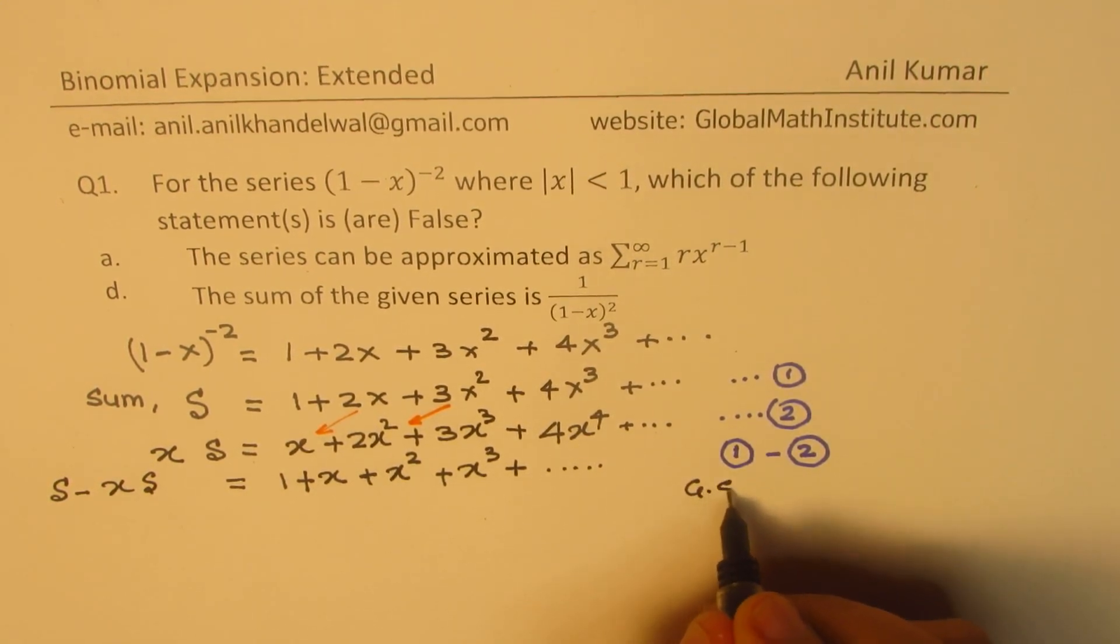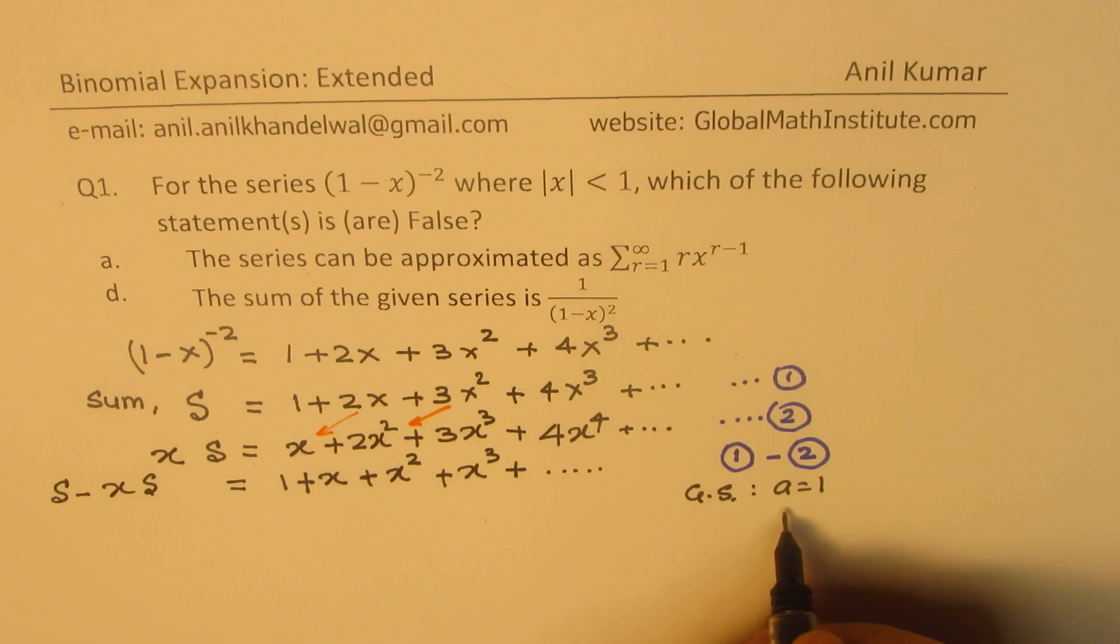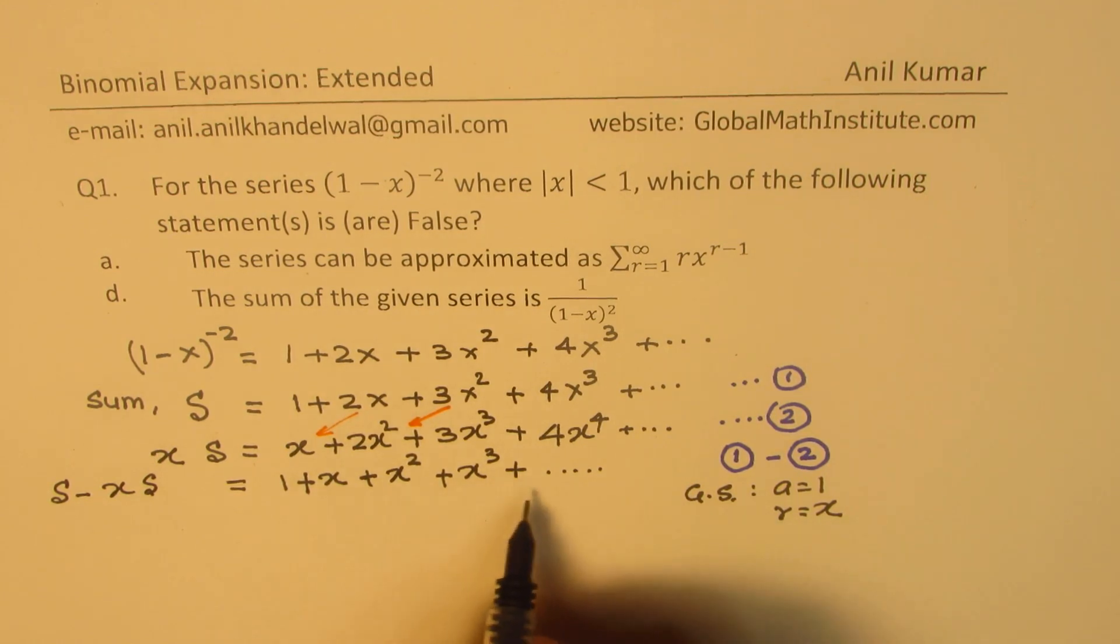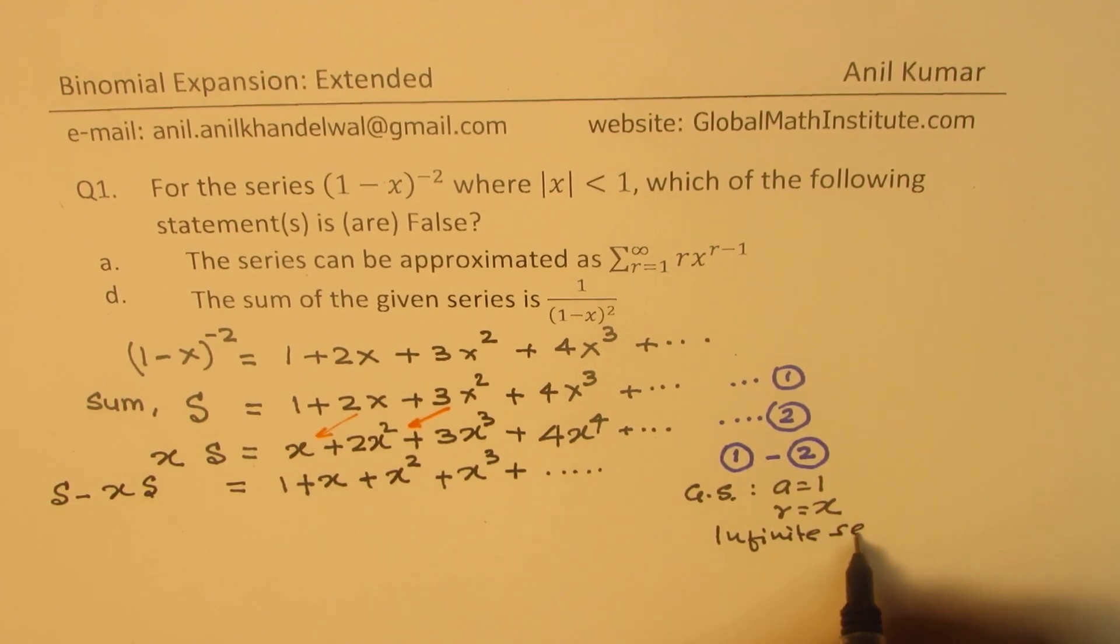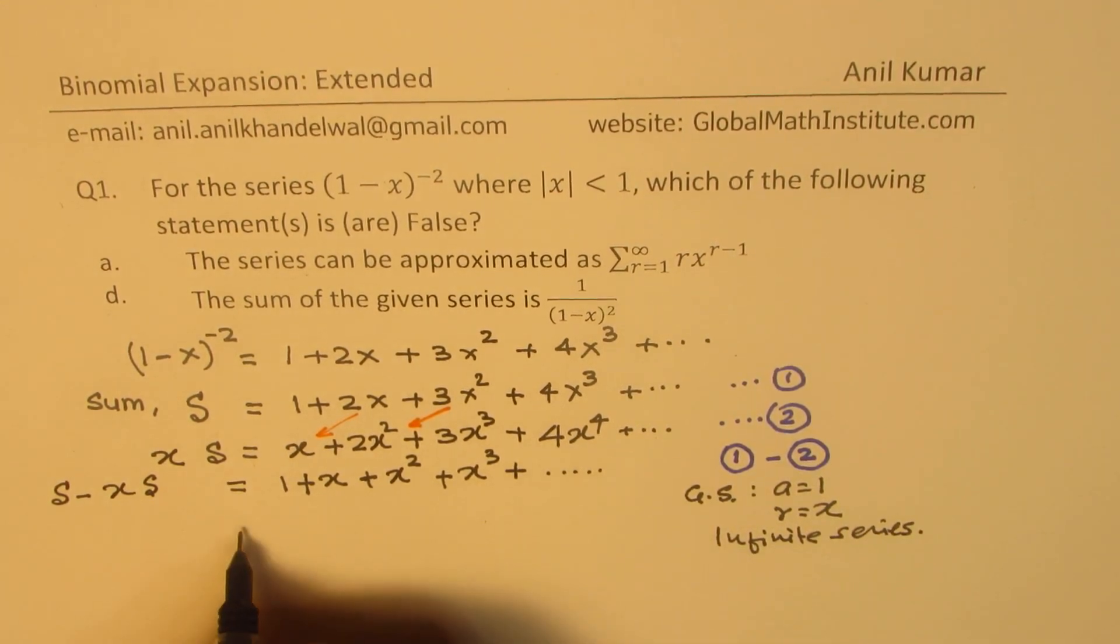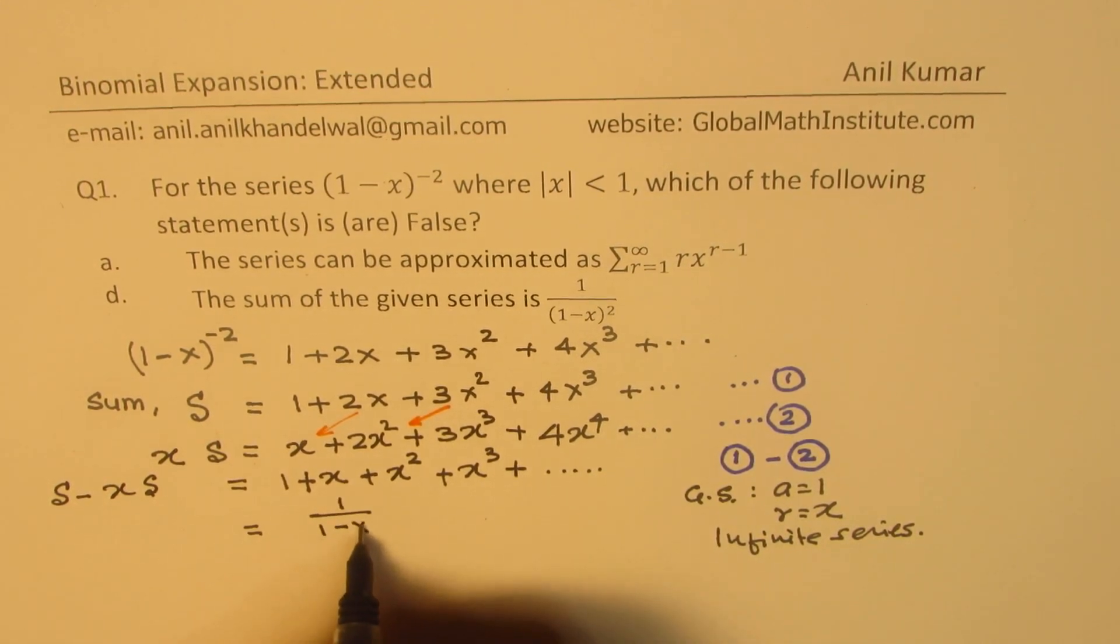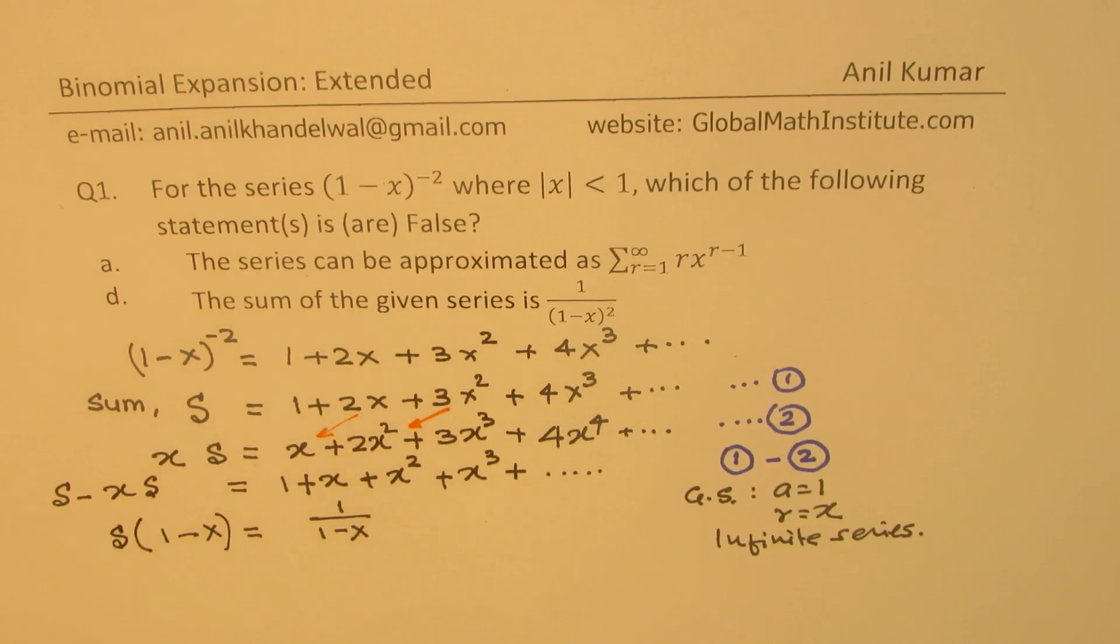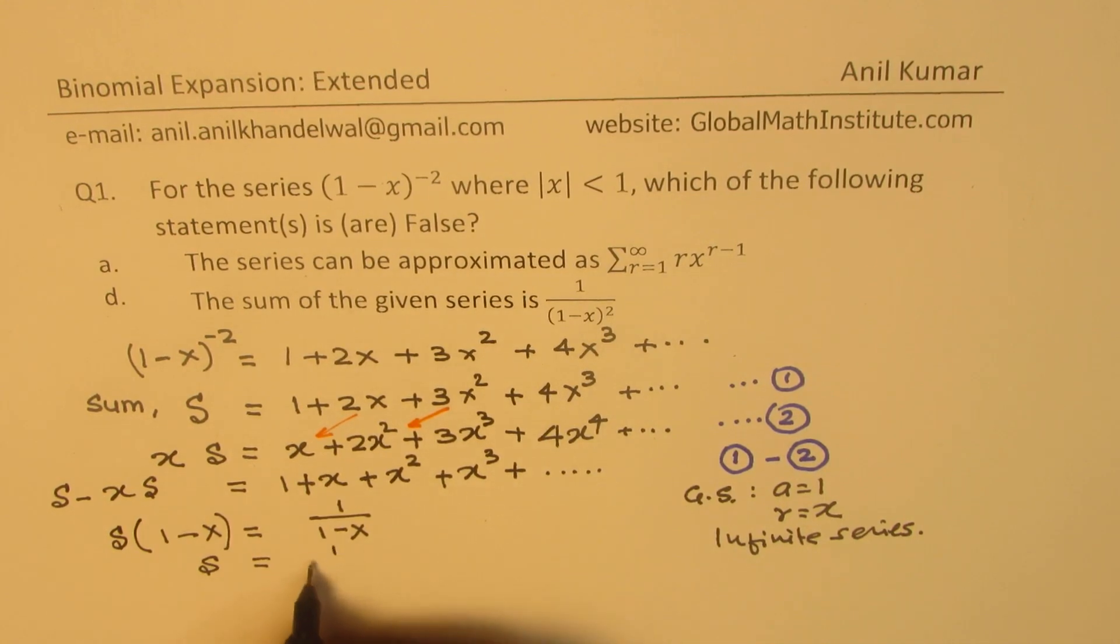This is a geometric series or geometric progression in which the first term a is 1 and each term is being multiplied by x. So r is x. And thirdly, this is an infinite series. Therefore, the sum of this series is 1/(1-x), which is, if I take S common here, I get S(1-x) here. Does it make sense? So from here, we can say that the sum of this series is basically 1/(1-x)².